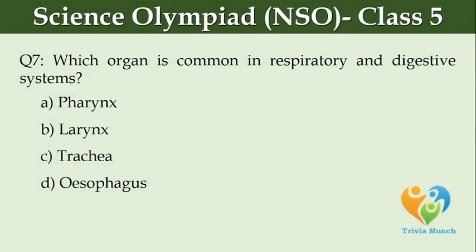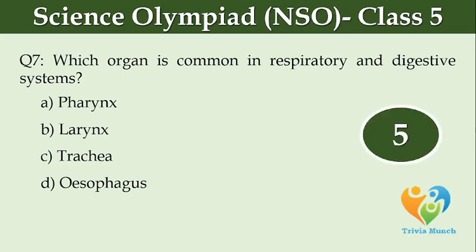Which organ is common in the respiratory and digestive systems? Option A: pharynx, Option B: larynx, Option C: trachea, Option D: oesophagus.